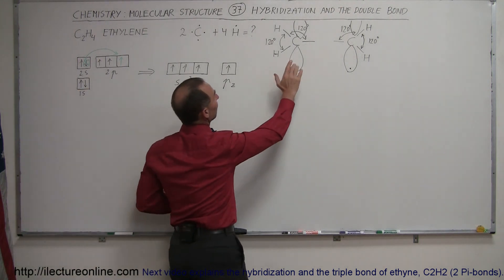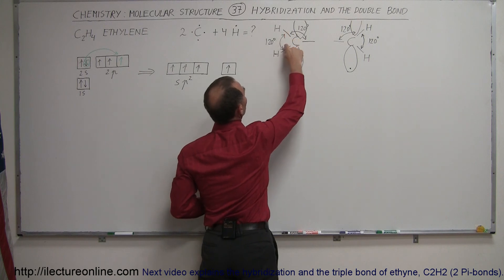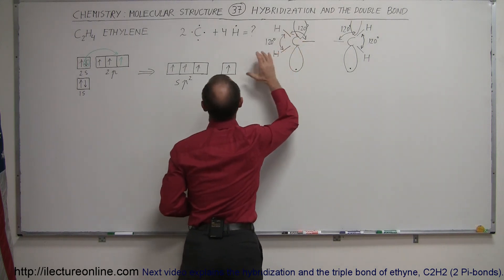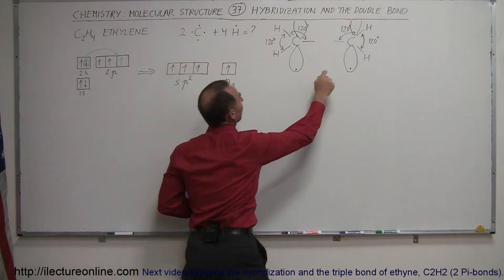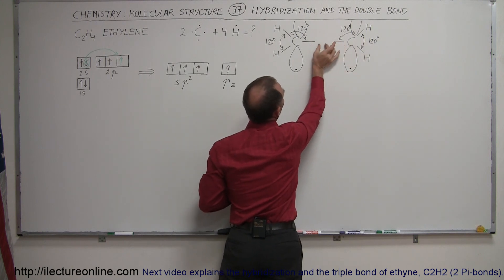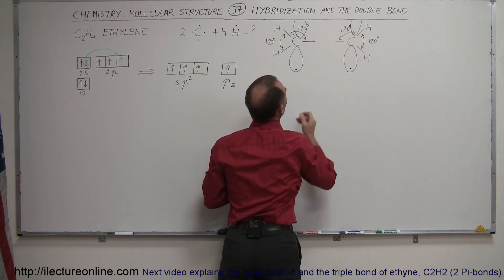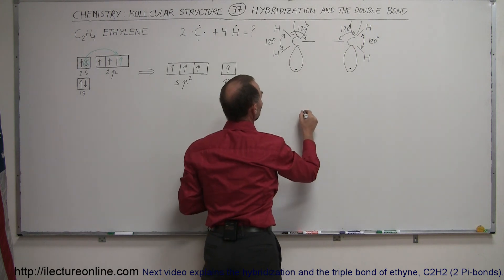So what happens here is that you can take a look at it here. We have the three orbitals that are the hybridized orbitals from the sp2, right on both sides like that. Those then join together. That becomes a single bond between the two. But then you end up with something that looks like this.